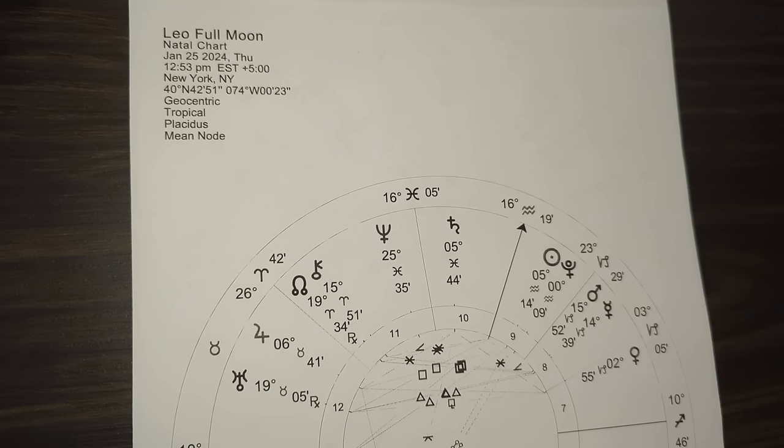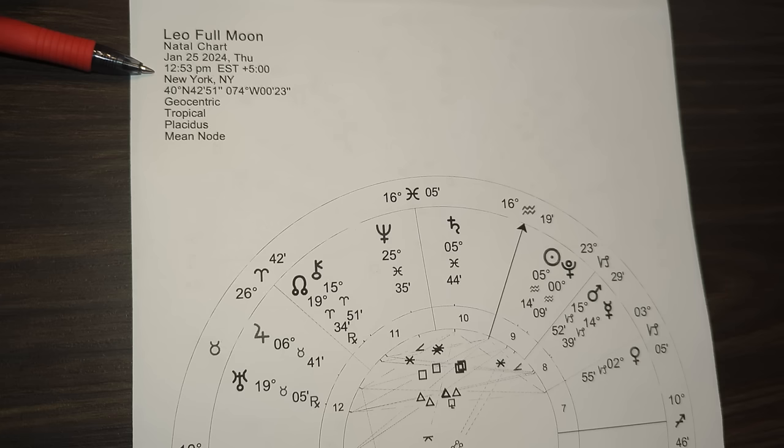Hey, it's Molly. Welcome back to my channel as we take a look at the Leo full moon happening on January 25th, 2024 at 12:53 PM Eastern time. Be sure to adjust for your location on the planet. We have a lot to talk about in this first full moon of 2024, so let's get to it.